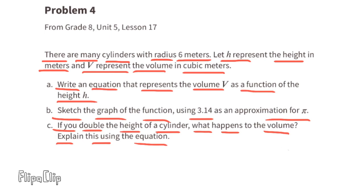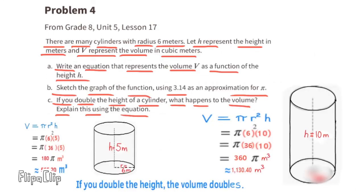Part c: If you double the height of a cylinder, what happens to the volume? Explain this using the equation. In these examples, the cylinder on the left has a height of 5 meters, and the cylinder on the right is doubled. It has a height of 10 meters. So essentially, we're just substituting the value for h either with a 5 or with a 10. And in doing so, the volume also doubles.